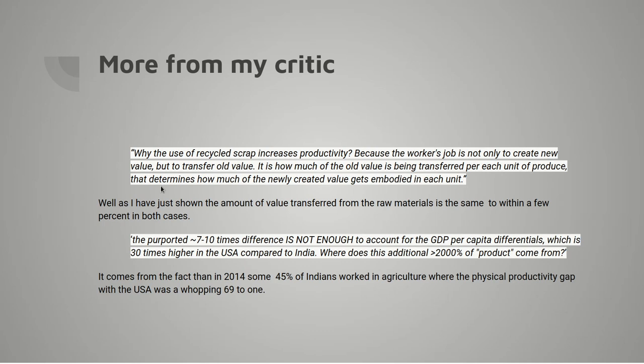The critic says: 'Why does the use of recycled scrap increase productivity? Because the worker's job is not only to create new value but transfer old value.' Well, that's rather confused. As I've shown, the amount of value transferred from the raw materials is the same to within 10%, whichever way it's done. He then says the purported 7 to 10 times difference is not enough to account for the GDP per capita differential of 30 times. Where does the extra 2,000% come from? Well, it comes from the fact that in 2014 some 45% of Indians were still working in agriculture, where the physical productivity gap to the US was a whopping 69 to 1.